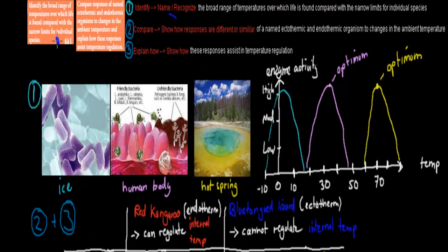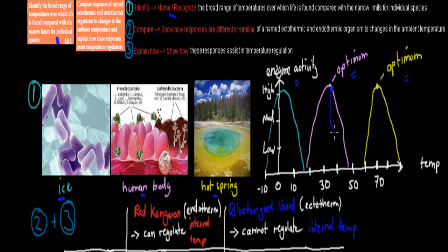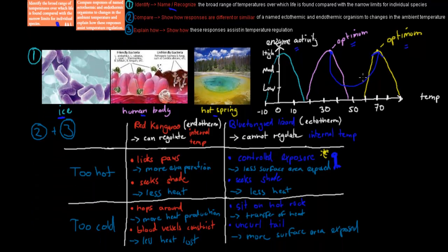The first dot point says 'identify' the broad range of temperatures over which life is found compared to the narrow limits for individual species. Life can be found at different temperatures: in ice at around 0 degrees, in the human body at 37 degrees, and in hot springs at around 70 degrees Celsius. Each of these environments has enzymes with different optimum temperatures. If you take an enzyme from a hot spring and put it into the human environment or vice versa, that enzyme would become denatured and not work properly. We have a huge spectrum of different enzymes, each working in a specific environment.